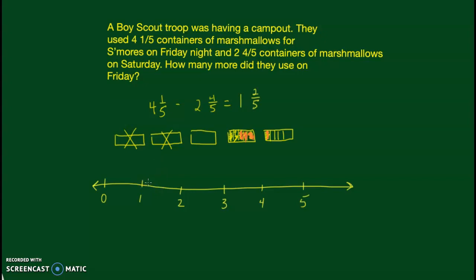I'll start labeling between one and two: one, one and one-fifth, one and two-fifths, one and three-fifths, one and four-fifths, one and five-fifths or two — and so on for two and one-fifth, two and two-fifths, etc. Our starting point is four and one-fifth, marked here on the number line.